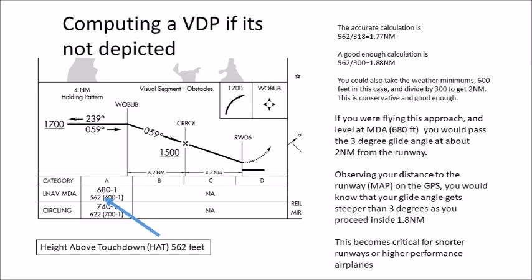Observing the distance on your GPS, you would know that the glide angle then gets steeper and steeper as you proceed inside of 1.8 nautical miles. So if I'm at one nautical mile, which is the published visual minimums, I could have a five or six-degree glide angle, which except for certain low, slow airplanes with great big flaps, could be a really difficult thing to do. So it becomes critical for short runways and higher performance airplanes, and that's the main reason it's used.